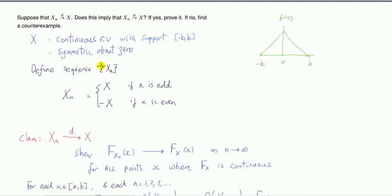We define a sequence X_n to be linked to X as follows: it's going to be same as X when n is odd, and minus X when n is even. So the sequence of X_n is flipping back between these two random variables for odd and even.